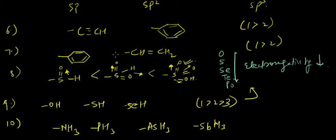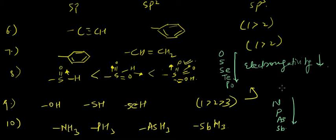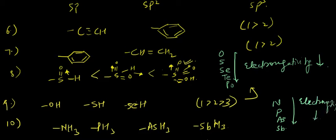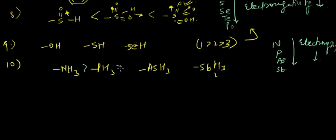Looking at the periodic table, when atoms are in the same group, electronegativity decreases as we move down the group. So the order for these elements reflects decreasing electronegativity down the group.